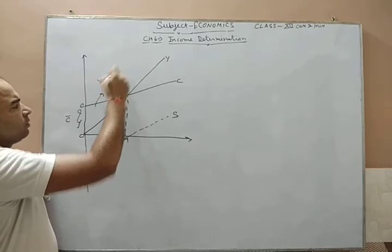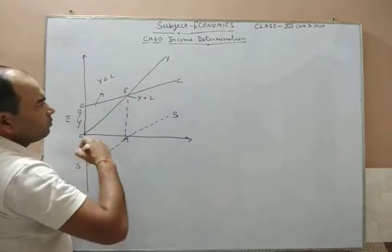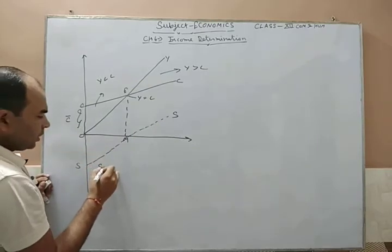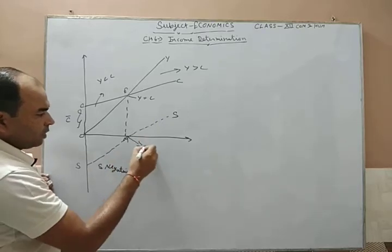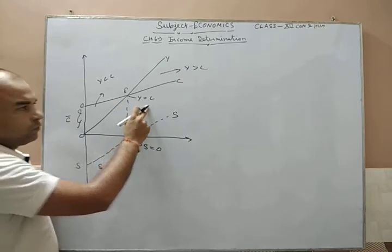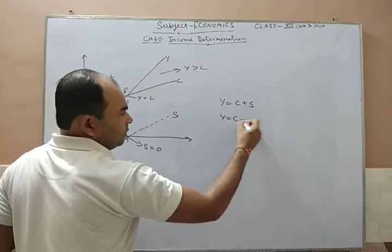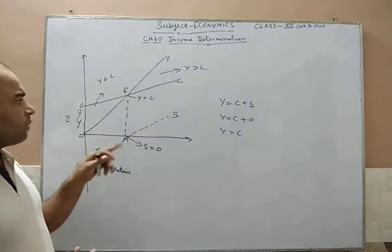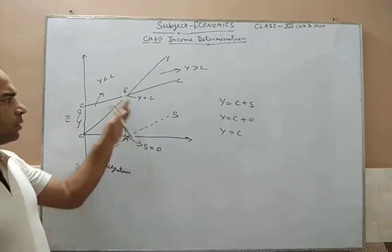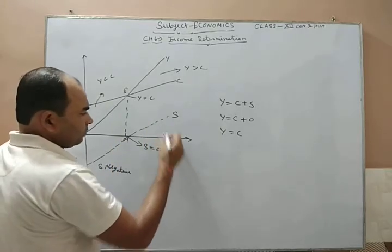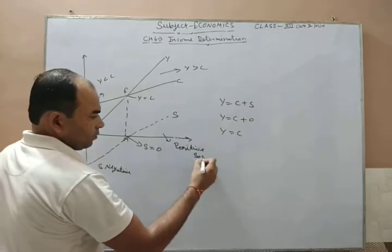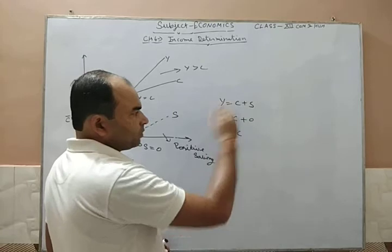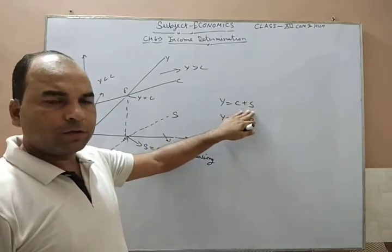At the break-even point, Y is equal to C, so S is equal to zero. Before the break-even point, S is negative. After the break-even point, saving is positive because Y is greater than C. You can verify: Y equals C plus S, so if Y equals C, then S equals zero. At the break-even point E, Y equals C and S equals zero. After the break-even point there is positive saving where Y is greater than C.